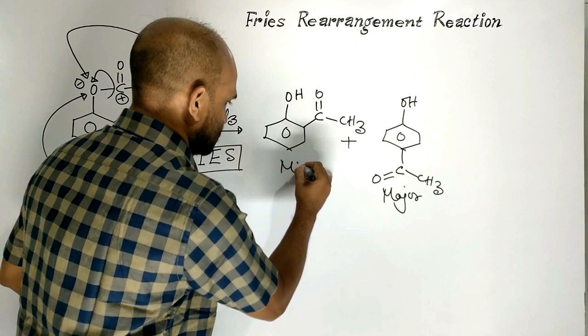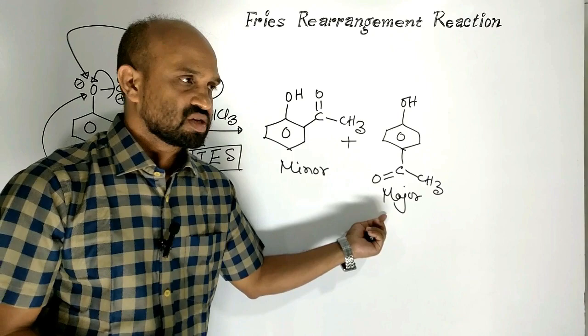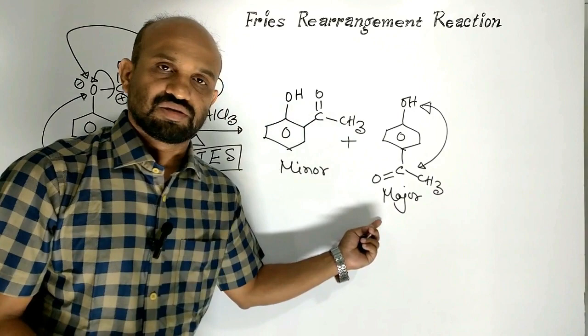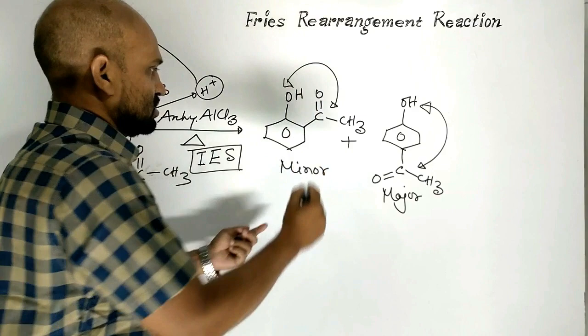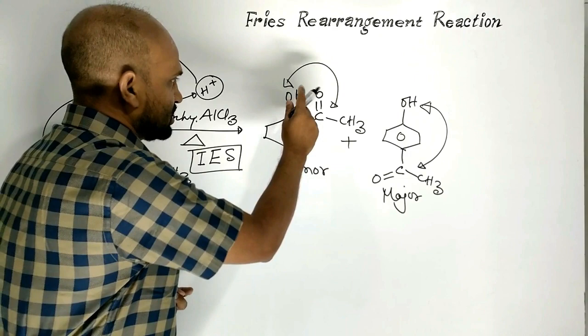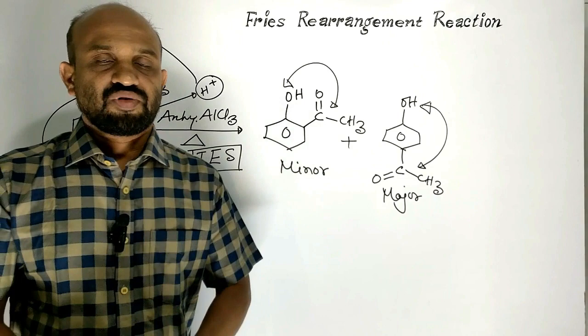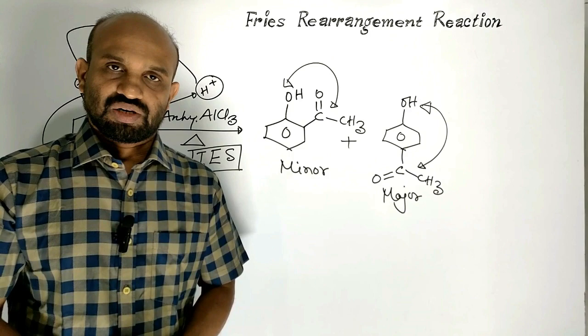Here, parahydroxyacetophenone is the major product and orthohydroxyacetophenone is the minor product. For the para product, steric hindrance is the least. But for orthohydroxyacetophenone, there is steric hindrance between these two groups, which is why it cannot form in large quantities.